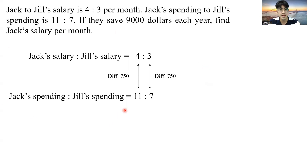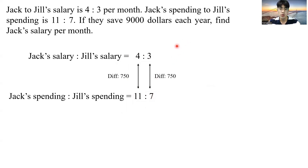We see that this difference — 4 minus 3, which is 1 — and the difference 11 minus 7, which is 4, should be the same. To unify them, we could multiply the first ratio by 4.